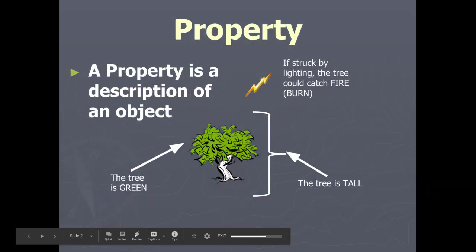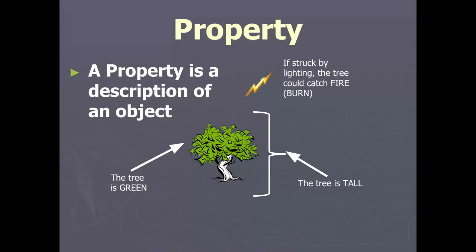First thing is that a property is basically just a description. The tree is green, the tree is tall. If the tree gets struck by lightning, it will start on fire. Any sort of description of the tree is a property of that tree.